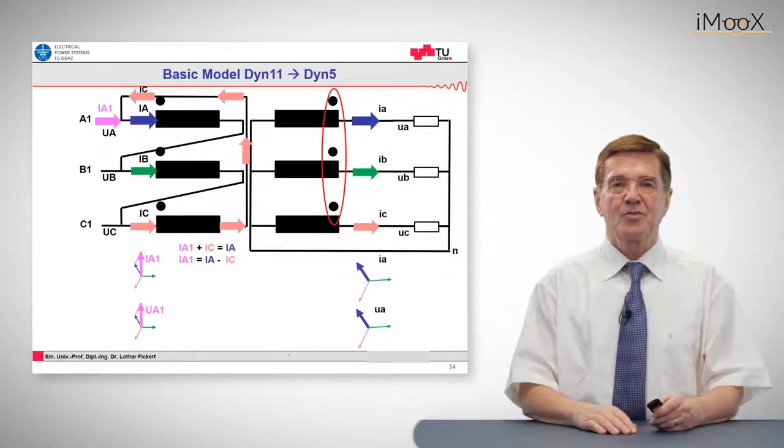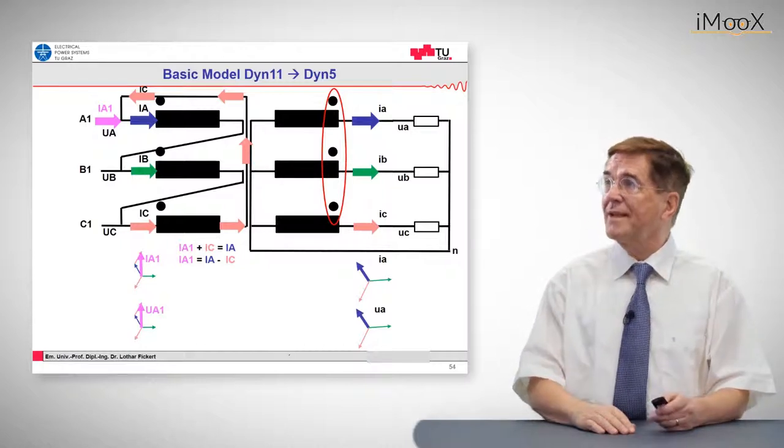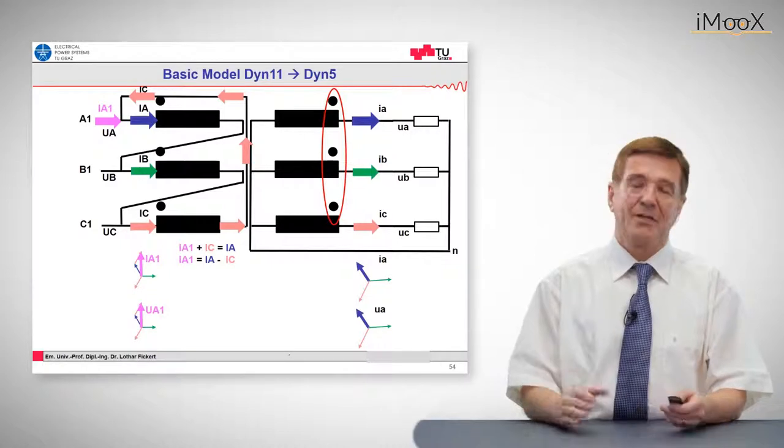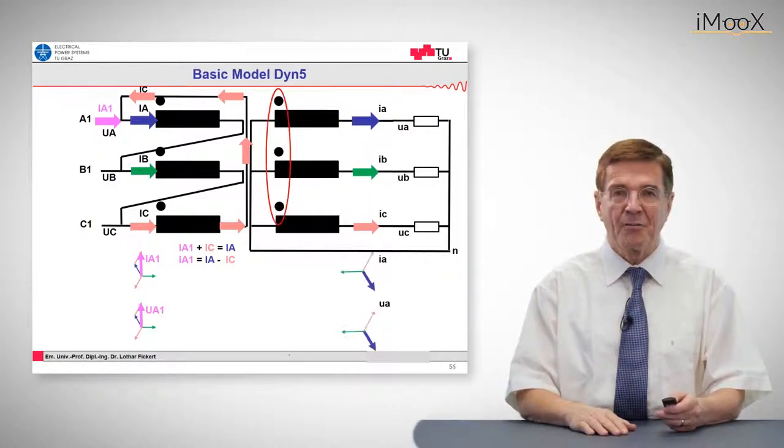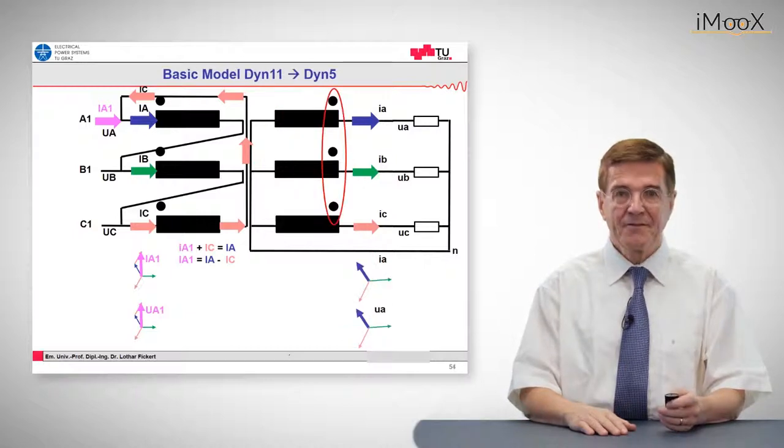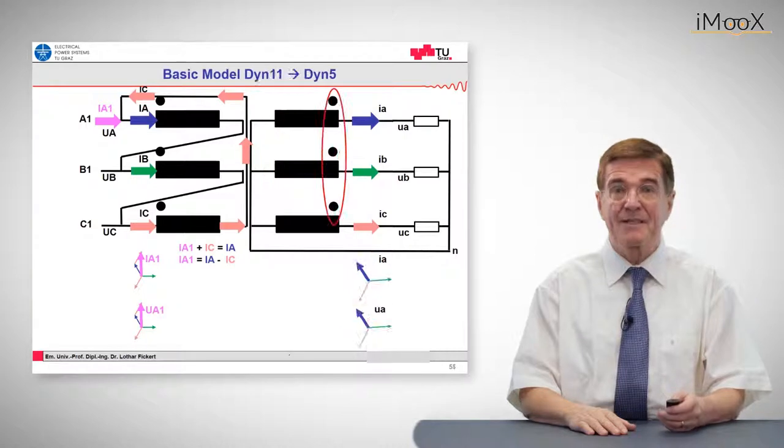Now the next one is the most usual one, that is Dy5. So again we have the previous one. And now we shift the polarization of the secondary winding in the opposite direction. You see, it was before. Now we have changed this and see what happens to the currents. The currents on the secondary side are turned by 180 degrees.